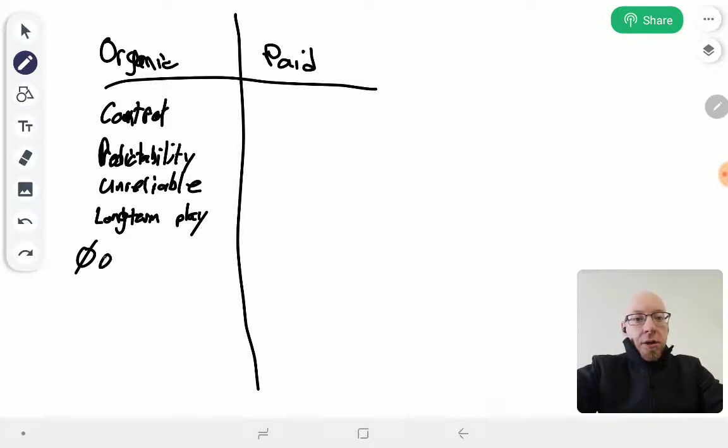And you have zero ownership. Zero. Zilch. No ownership. What that means is it doesn't matter where you're marketing—Facebook, Instagram, wherever—they can kick you off tomorrow. And then what? You're back at square one, back to zero.